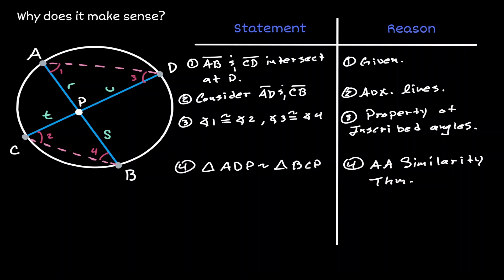Now knowing that we have similar triangles, then we know that corresponding parts are in proportion. Remembering that angle 3 was congruent to angle 4, then those sides opposite to them must be in proportion. And remembering that angle 1 was congruent to angle 2, then the opposite sides are in proportion.